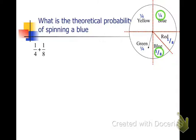What is the theoretical probability of spinning a blue? Now we have to look at all the sections that are blue. We have one-fourth is blue, which represents two-eighths, and another eighth. So altogether, we have three out of eight probability of getting blue.